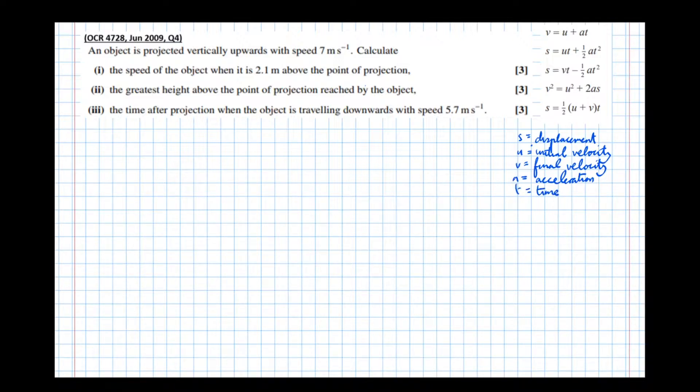And you'll sometimes see these called the SUVATT equations. So let's have a look at the question here. It says, an object is projected vertically upwards with speed 7 meters per second. Calculate the speed of the object when it is 2.1 meters above the point of projection.